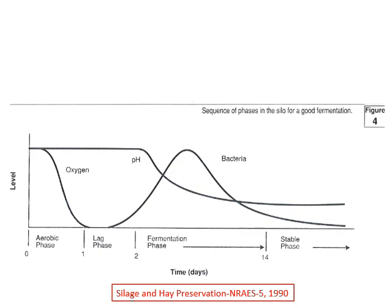As the lactic acid gets to a certain level, you're going to start to kill the bacteria and fermentation ends. We hopefully have a stable pH somewhere around four, and we go into a stable period where, quote-unquote, nothing happens. We'll go through each of these stages as we go through these slides.